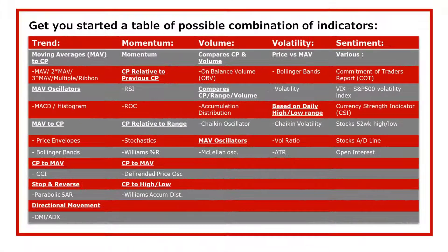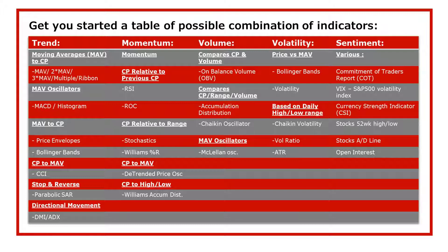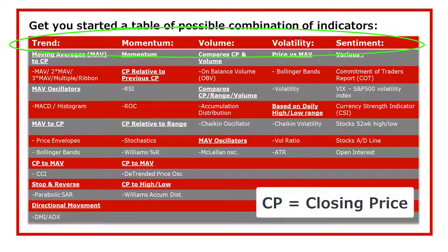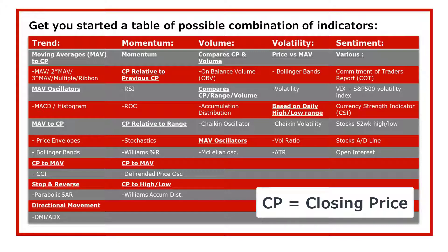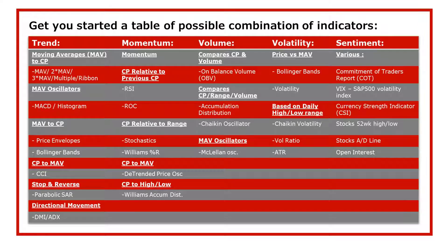I've constructed a table you can use as a guideline for putting indicators together. I've sorted it into five different headings, all creating independent variable sources of information: trend, momentum, volume, volatility, and sentiment. If you want to put combinations together, pick maybe one from the trend column, one from volume, one from sentiment, and make that your strategy. Don't pick two from the trend column and leave it at that — that would be breaking the rule of co-linearity. Use this table as your guide. You can take one from each of the five, or just two of them — you have to test it and see what works. It breaks out the indicators into different buckets to avoid co-counting the same information.